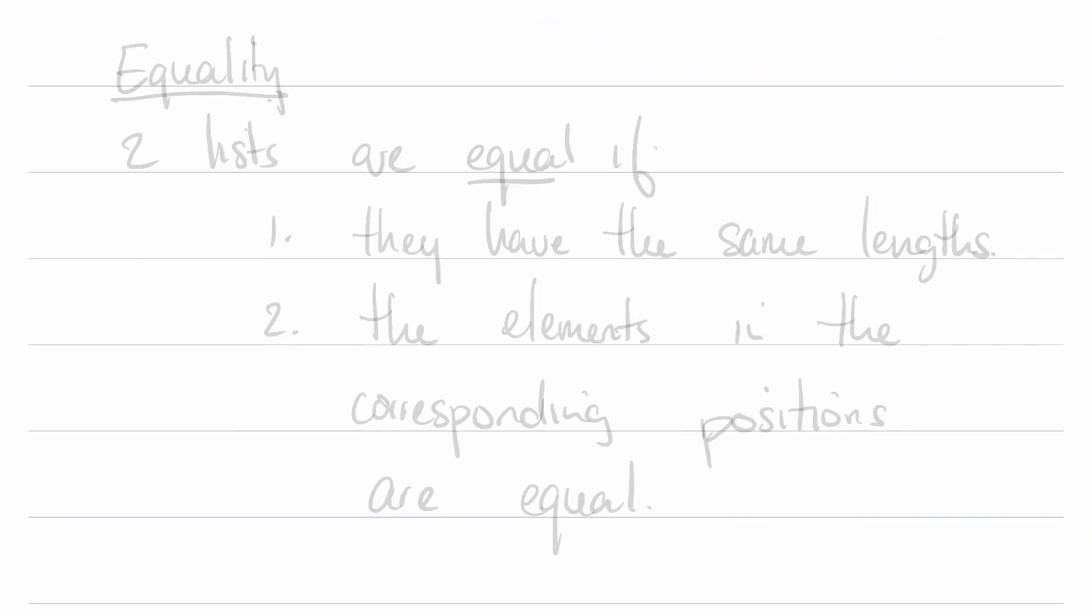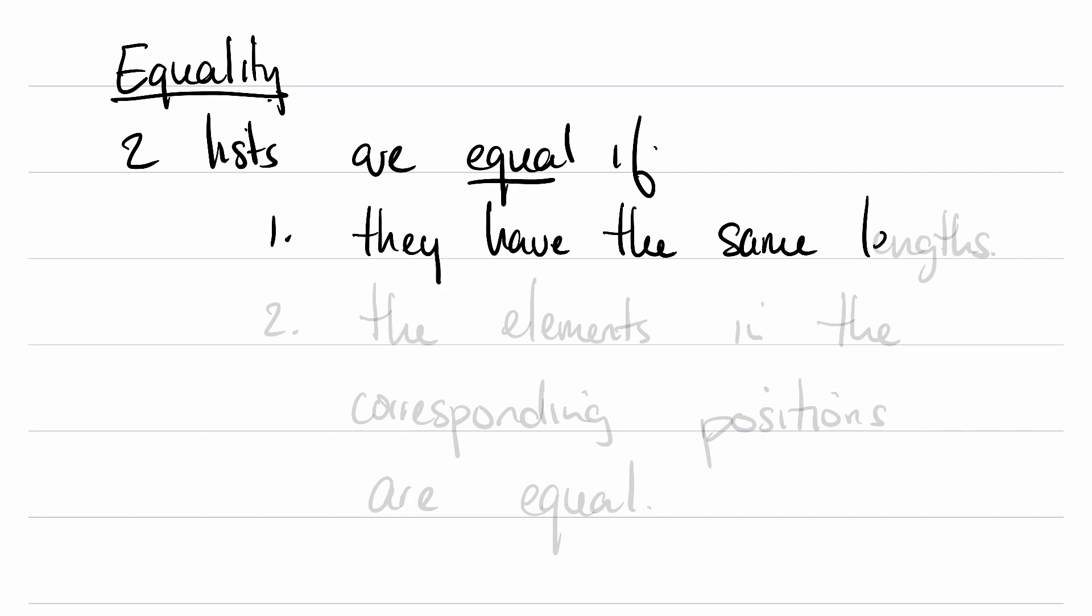Let's talk explicitly about how we know when two lists are equal to each other. This turns out to be very strict. Two lists are equal if they have two properties: one, they have the same lengths, and two, the elements in the corresponding spots are equal.